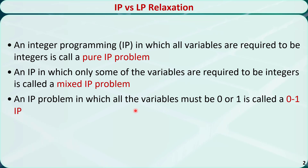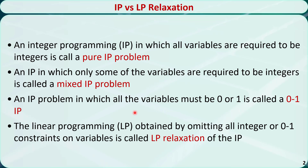If all the decision variables must be 0 or 1, then this problem is called a 0-1 integer programming problem or binary integer programming problem. In this course, we will only focus on integer linear programming, which requires the objective function and all the constraints to be linear.